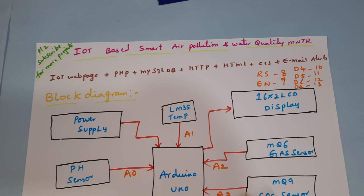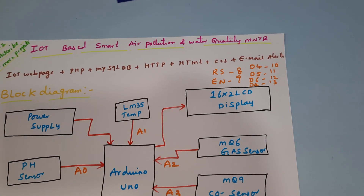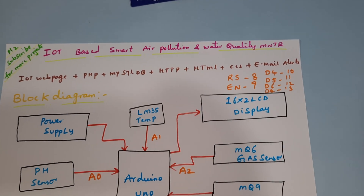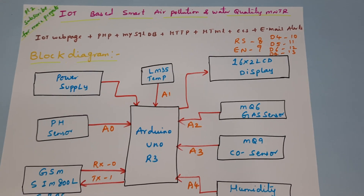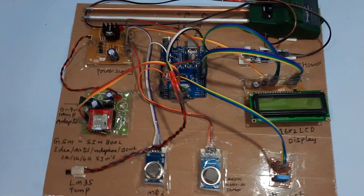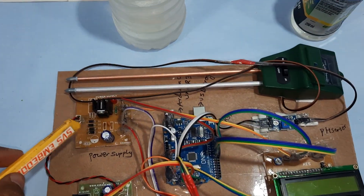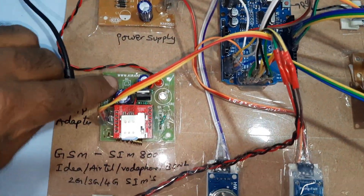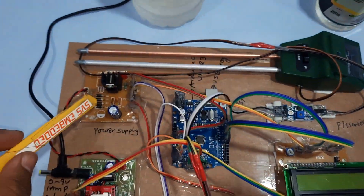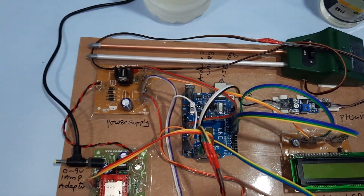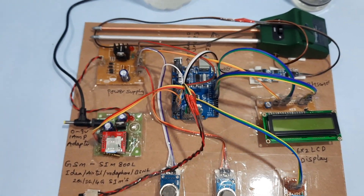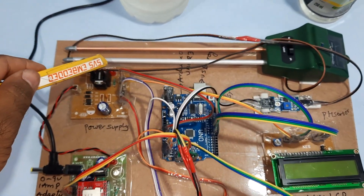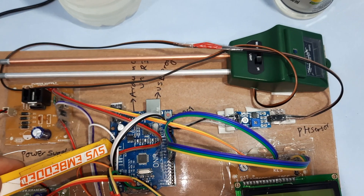The IoT web page uses PHP, MySQL DB, HTTP, HTML, CSS, and email alert. For hardware, we are using an adapter power source connected with a bridge rectifier, filter capacitor, 7805 regulator, and one LED. The main controller is the Arduino UNO R3 board.